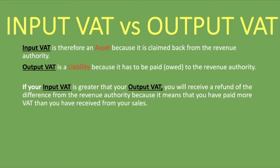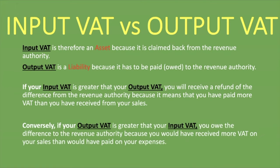You will do the same for your output VAT — how much have you charged on the sales you've made — and then compare the two. If your input VAT is greater, you will receive a refund of the difference. For example, if your input VAT is R100,000 and your output VAT is R80,000, you will receive R20,000, which is the difference, from the revenue authority.